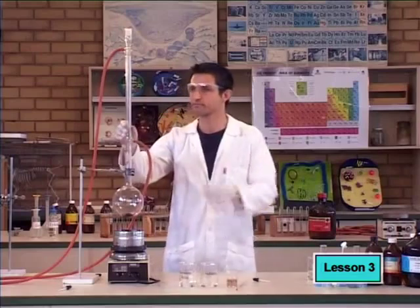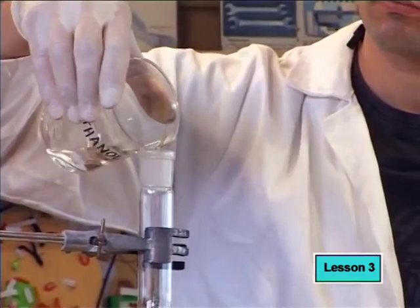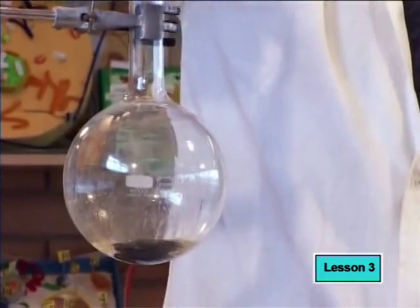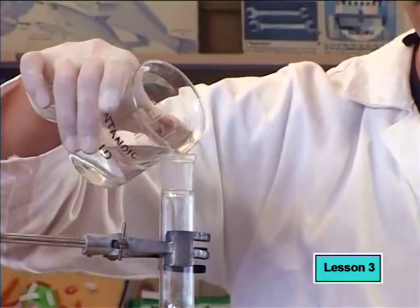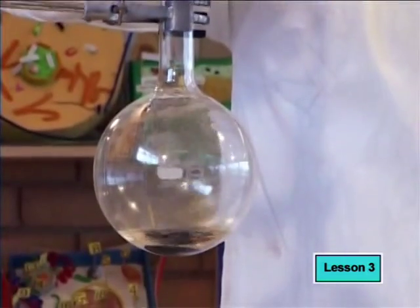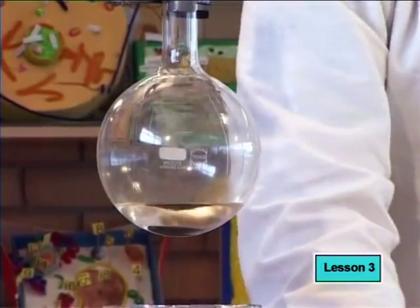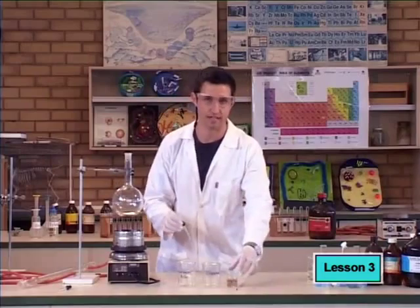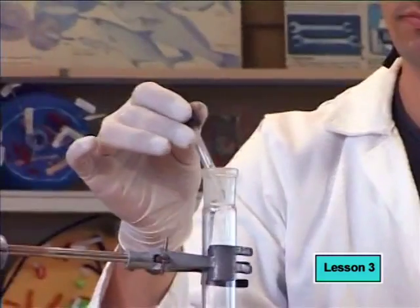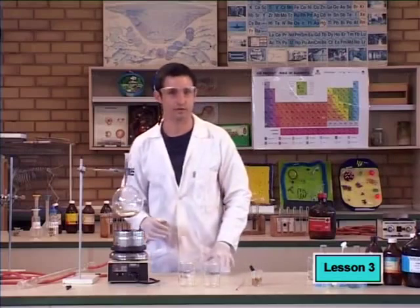Refluxing allows us to keep the reaction hot and boiling without losing any of the liquids inside. First, we place some alcohol inside the flask and some pentanoic acid. And finally, we add a few drops of sulfuric acid, being careful not to touch anything. This acts as a good catalyst for this reaction. Now we heat up the mixture and let it boil and reflux for 10 minutes.